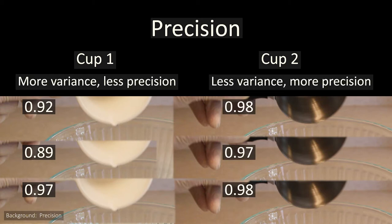You can see that the first cup's measurements vary a lot more from each other than the second cups. In other words, the first cup's measurements are less consistent and therefore less precise.